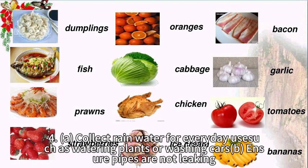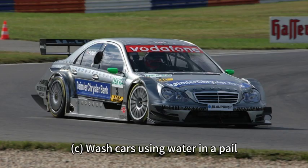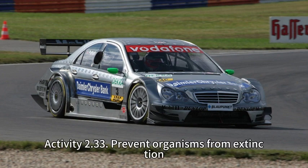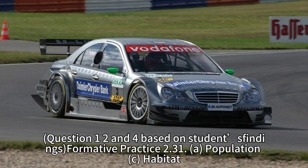Question 4: A. Collect rainwater for everyday use such as watering plants or washing cars. B. Ensure pipes are not leaking. C. Wash cars using water in a pail. Any other answers are accepted.